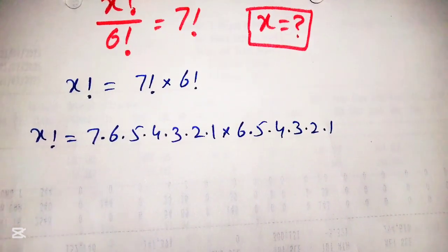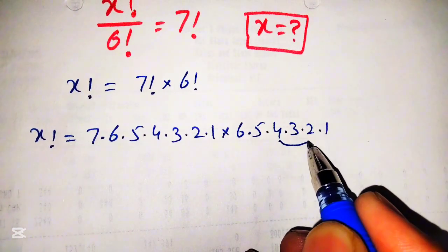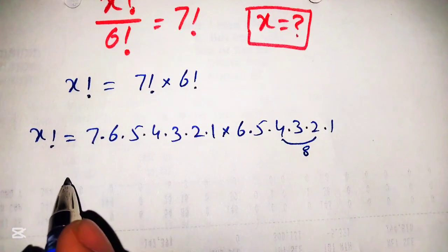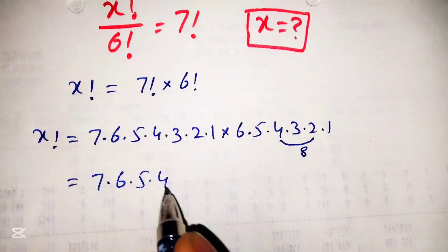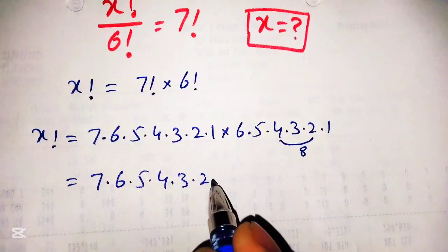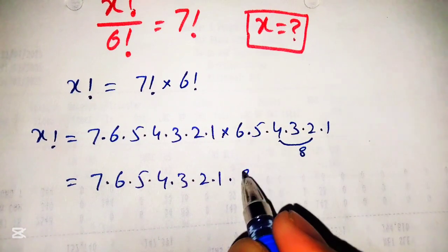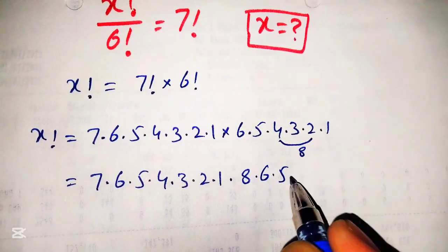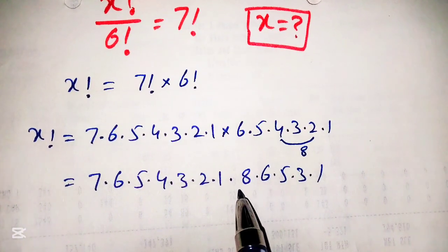Now we will simplify this. First we can see that 4 multiplied by 2 is equal to 8, so we will write it as 7 into 6 into 5 into 4 into 3 into 2 into 1, into 4 into 2, which gives us 8, into 6 into 5 into 3 into 1. So this gives us the 8 here.